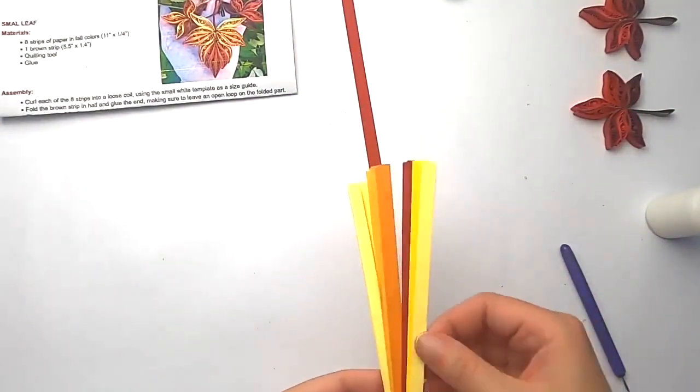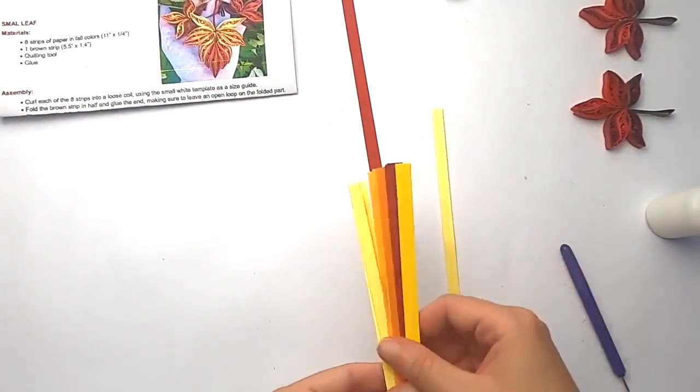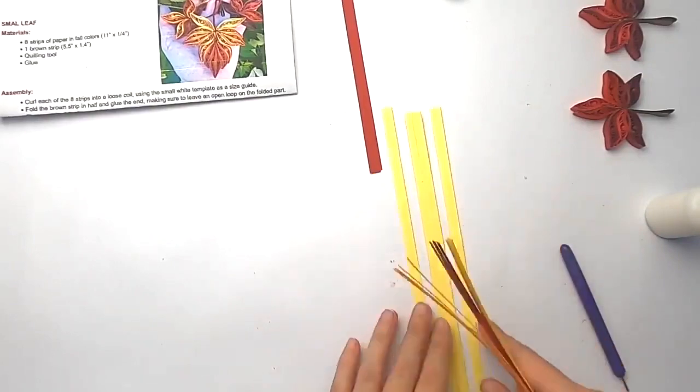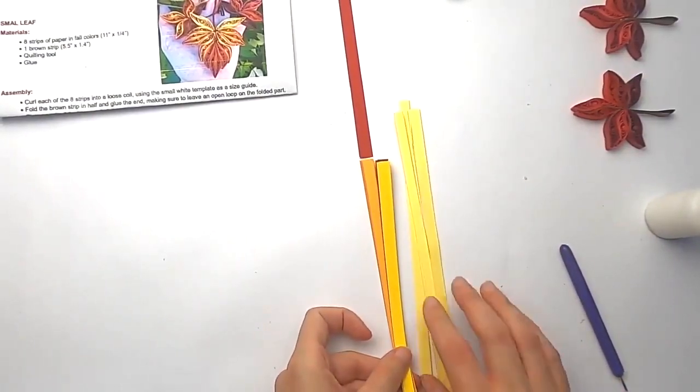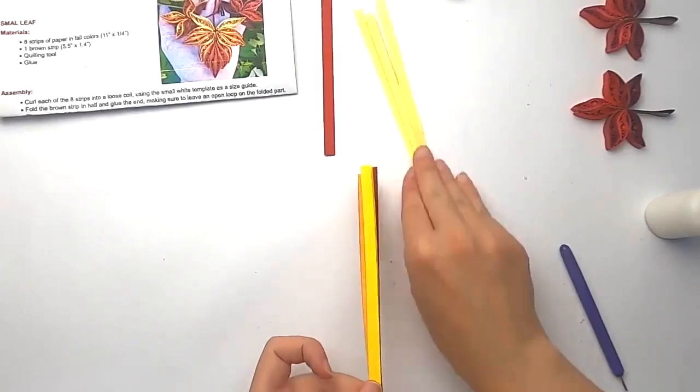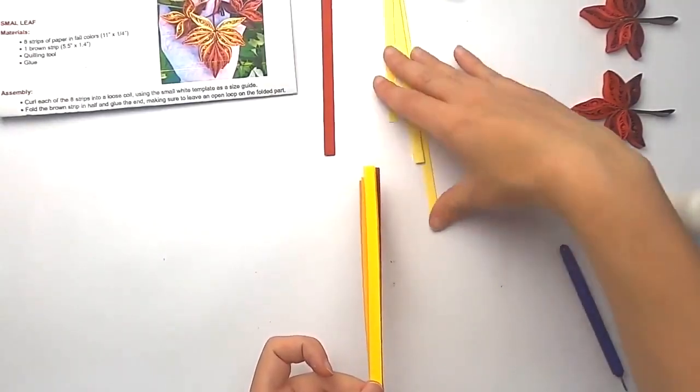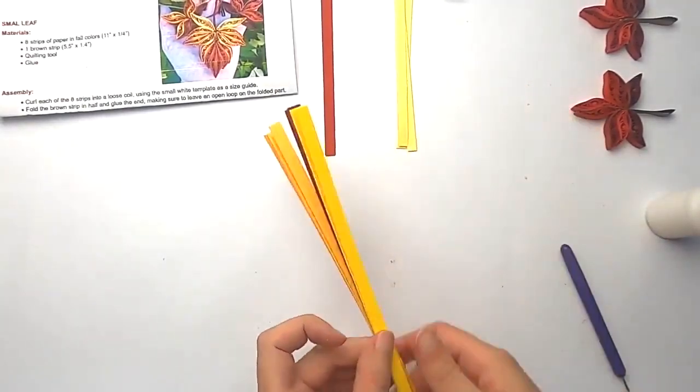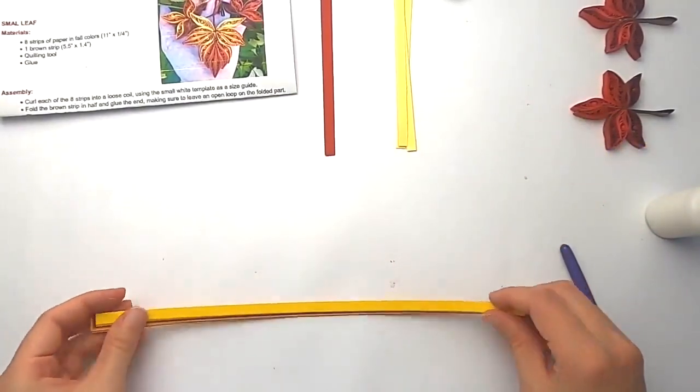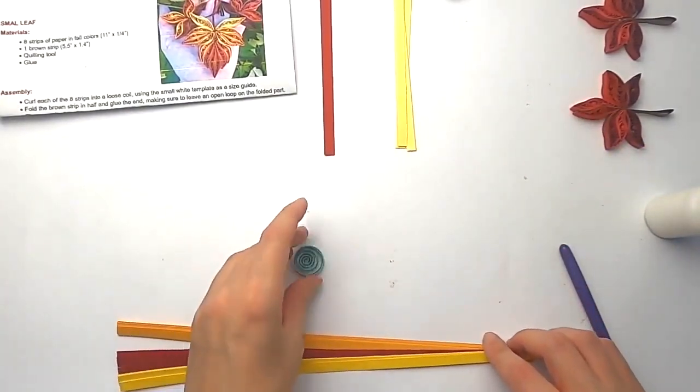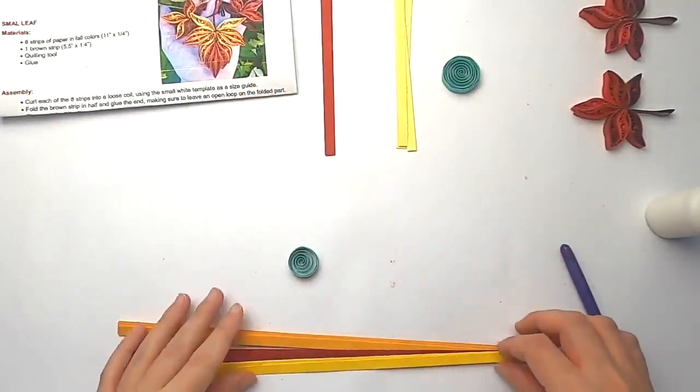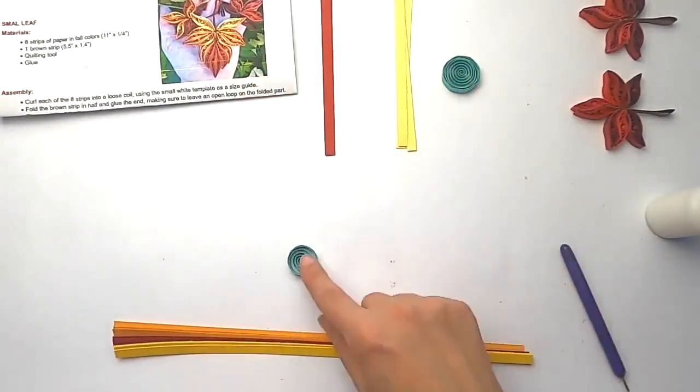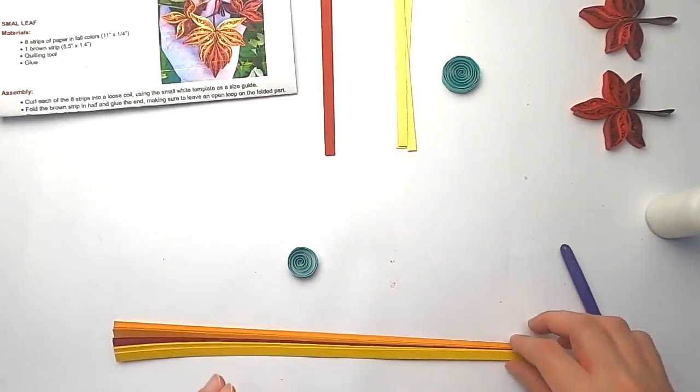And with the other ones, let me check. There are four that are a lighter yellow. You want to put those to the side as well. The rest of them we are going to do the same as we did before with the smaller template. We're just going to do loose coils using the smaller template as a guide.